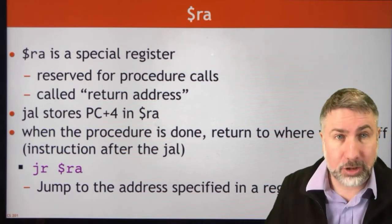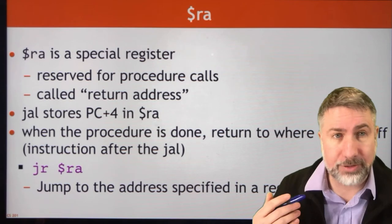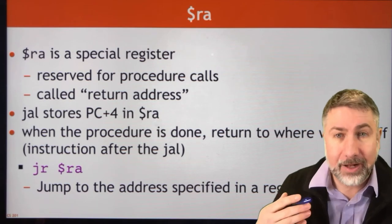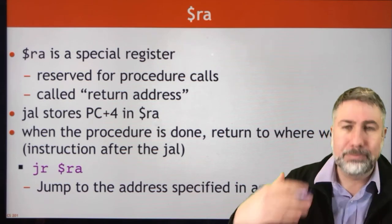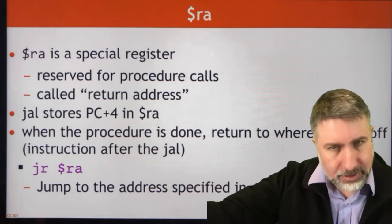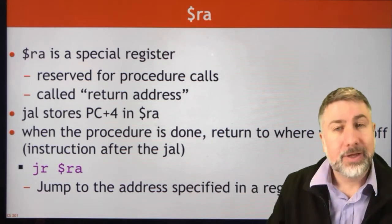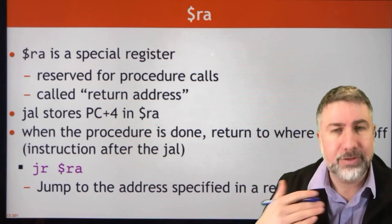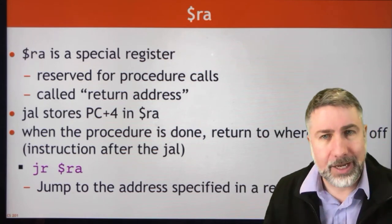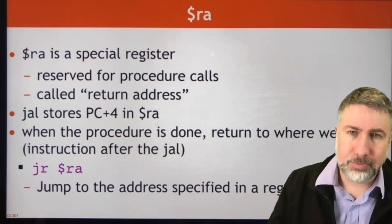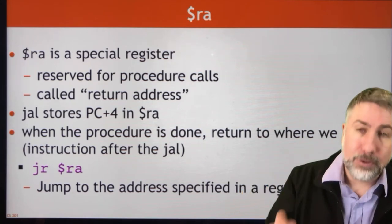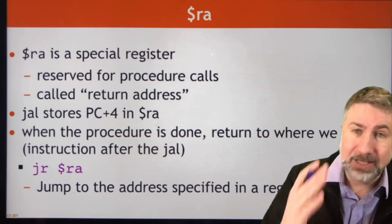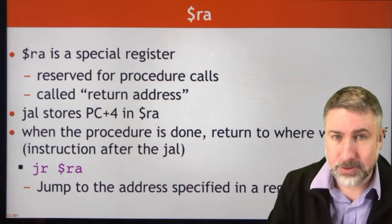So every procedure call will start with JAL — that's jump and link — to get you to the procedure, and then every procedure call will end with JR RA — jump register using the return address — to get you back where you started.